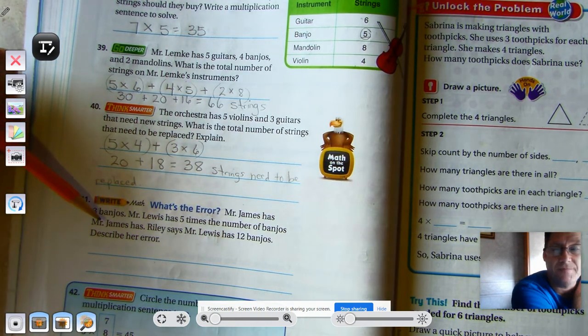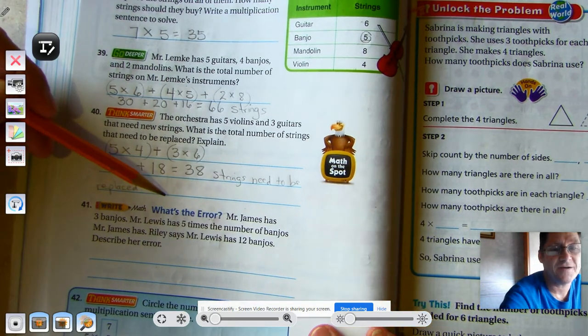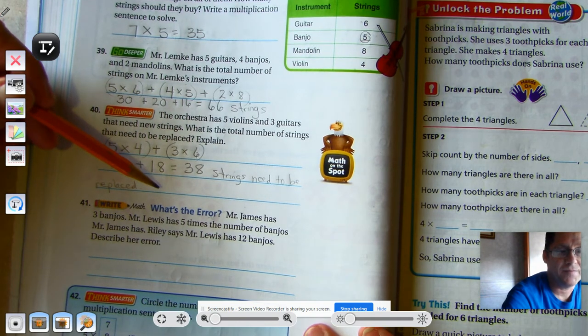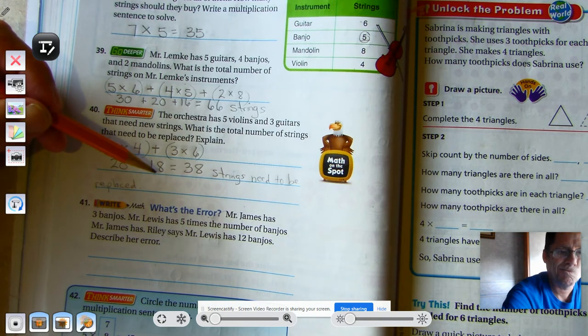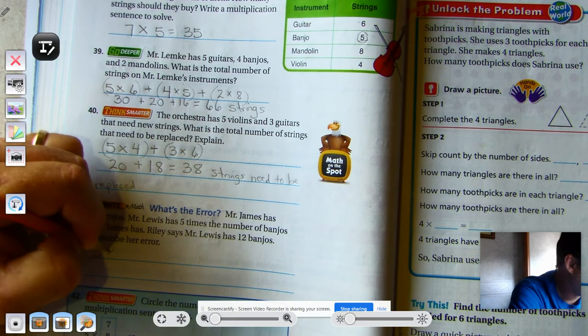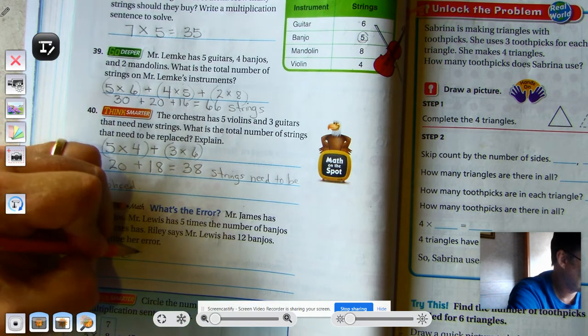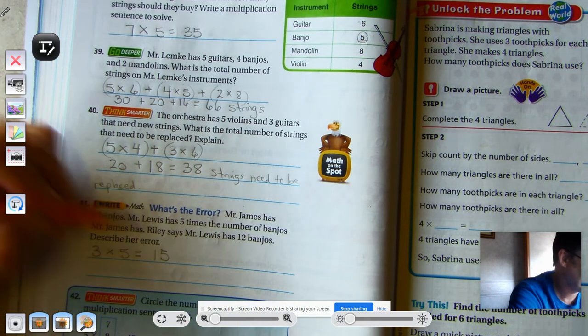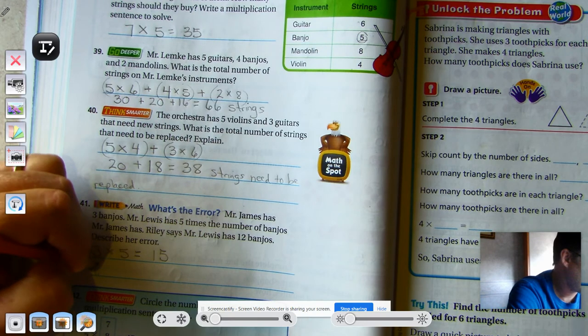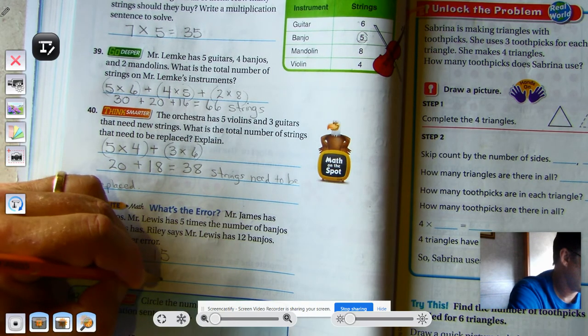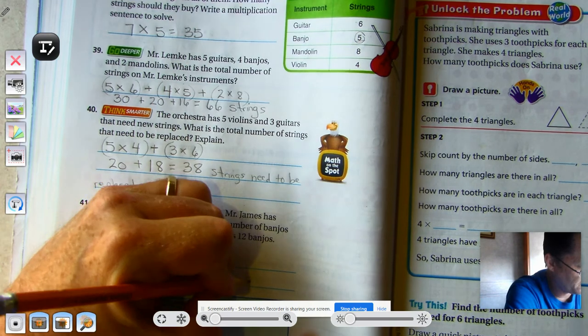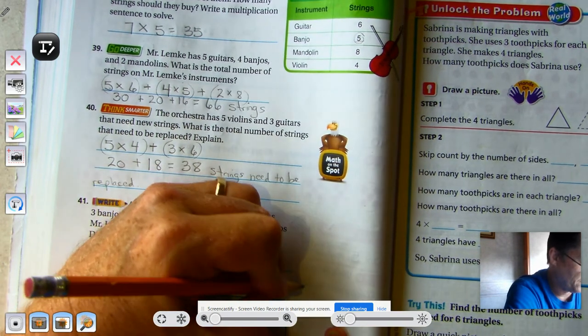Problem 41. Mr. James has 3 banjos. Mr. Lewis has 5 times the number of banjos Mr. James has. Riley says Mr. Lewis has 12 banjos. Describe her error. Hmm. Mr. James has 3 banjos. Mr. Lewis has 5 times that amount. 3 times 5 is 15. So, she probably multiplied 3 times 4 to get 12, instead of 3 times 5.